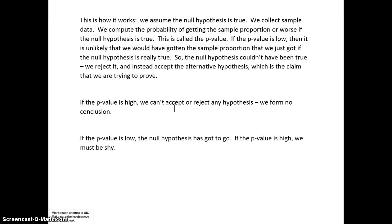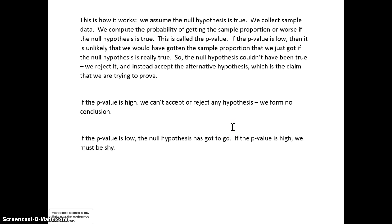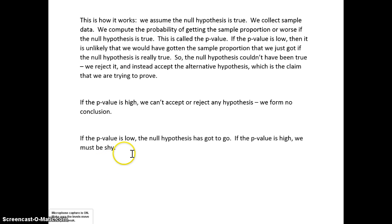If the p-value is high, unfortunately we can't form any conclusions — we can't accept or reject any of the hypotheses. There's a saying to help memorize this: if the p-value is low, the null hypothesis has got to go. If the p-value is high, we must be shy. So if the p-value is low, we reject the null and accept the alternative. If the p-value is high, we don't accept or reject anything — we don't come to any conclusions.